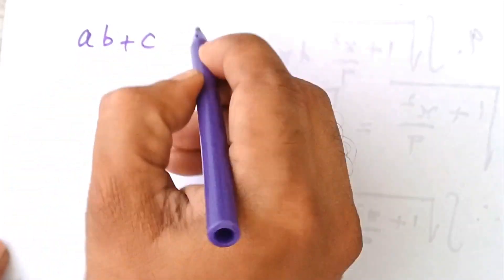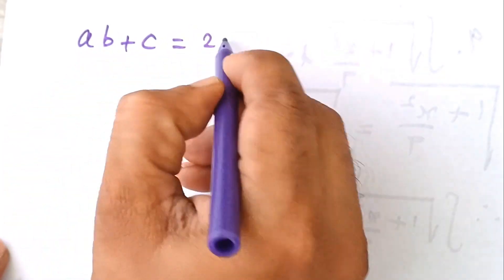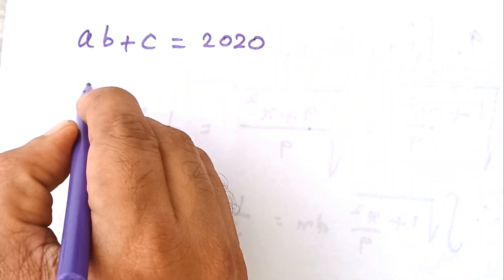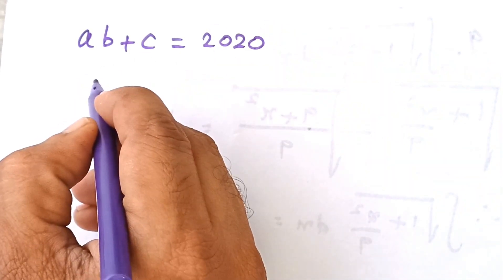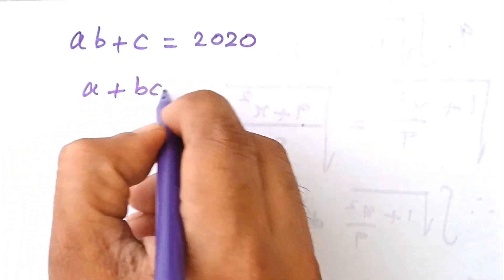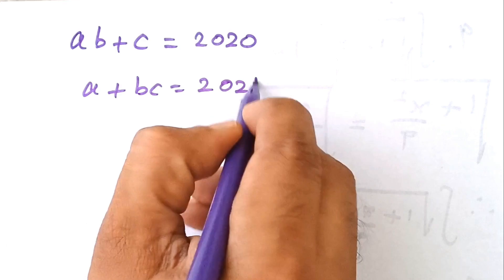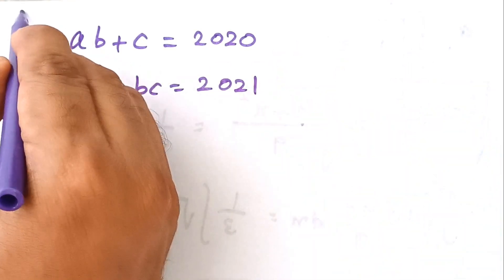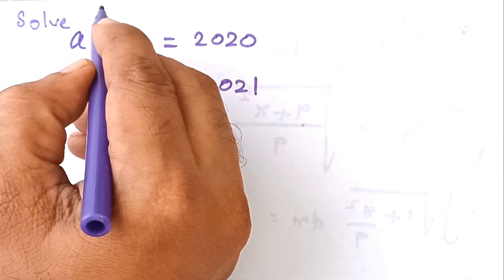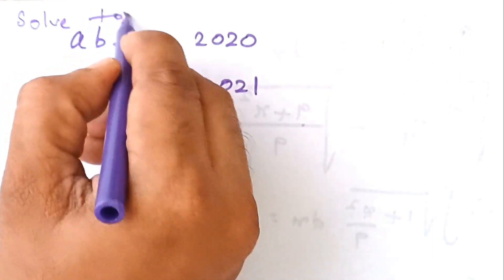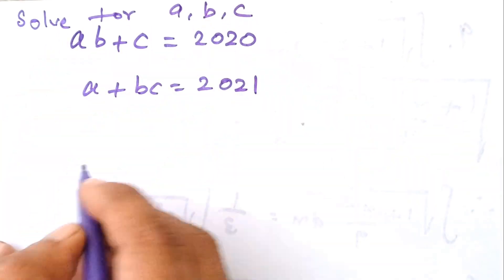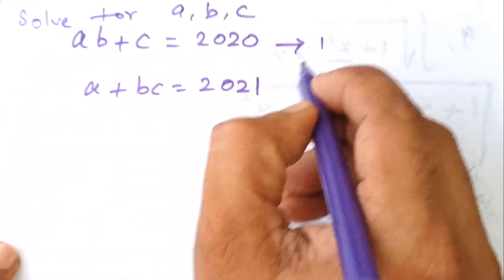A·B plus C is equal to 2020. Then A plus B·C is equal to 2021. We want to solve for A, B, C. Let us take this as equation 1 and this as equation 2.